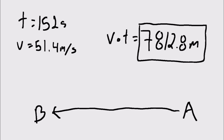To find how far the plane traveled between event A and event B, we can find the displacement by taking the velocity times the time to get 7,812.8 meters.